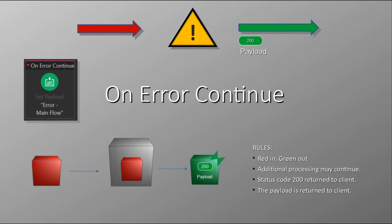Next, we will discuss the OnErrorContinue component of error handling in a flow. It behaves in the following manner: the remainder of the flow will not be processed. A status code of 200 will be returned to the client, along with the payload. In the diagrams for OnErrorContinue, we will use a red arrow going in, but a green arrow going out.